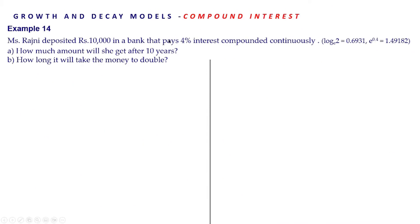The next model is compound interest. Ms. Ranjini deposited rupees 10,000 in a bank that pays 4% interest compounded continuously. How much amount will she get after 10 years? How long will it take for the money to double? Here, Ranjini deposited rupees 10,000 at an interest of 4% compounded continuously.